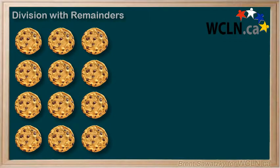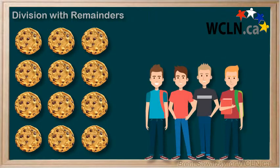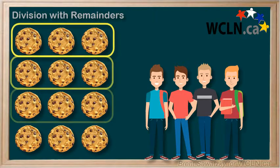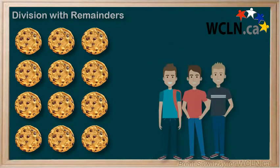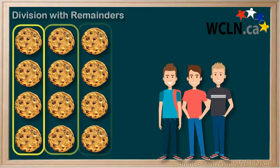In the past we've looked at division examples where we divided 12 cookies among friends. When we divided them among four friends, we found that each friend received three cookies. When we divided them among three friends, each friend received four cookies.